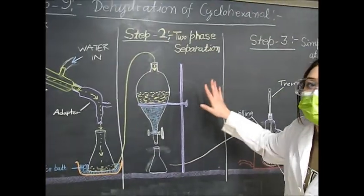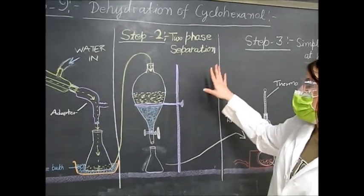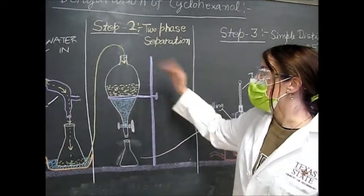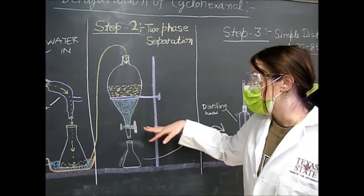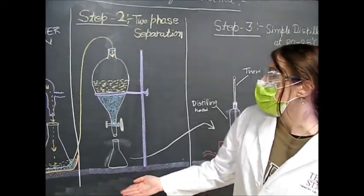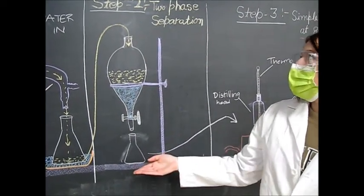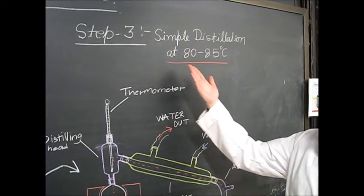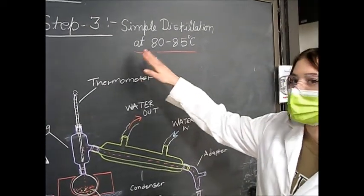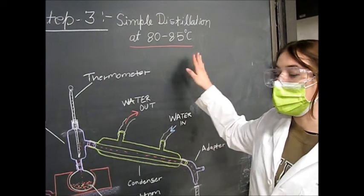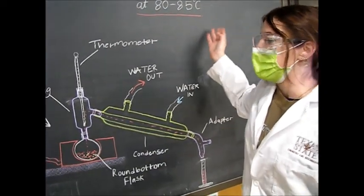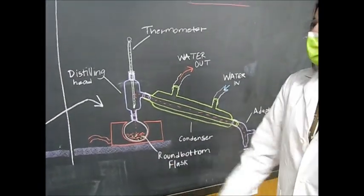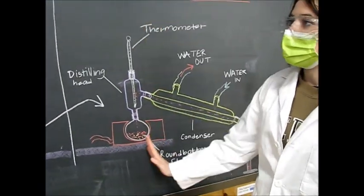The second step in this experiment is two-phase separation using a separatory funnel — creating an organic phase and an aqueous phase which we will separate into a receiver. The organic phase collected from this step will be used in the third step: simple distillation. We will only want the product that distills out from 80 to 85 degrees Celsius — this will be our cyclohexene. The simple distillation apparatus is similar to the fractional distillation apparatus except we do not have the large fractional distillation column.